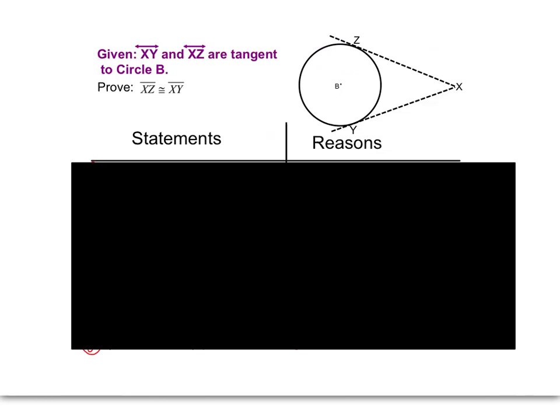So let's take a look. If XY and XZ are tangent to the circle — so these two segments here — we want to prove that this segment and this segment are actually congruent. Two tangents that start at the same point, both coming from X — I'm going to prove that those two tangents have to be equal. So, how are we going to do that?